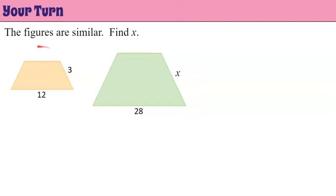It's your turn — you're told that the figures are similar and asked to find X. Since the figures are similar, their corresponding sides are proportional. Side 3 corresponds to side X, and side 12 corresponds to 28. Writing the proportion: 3/X = 12/28. Using cross products: 12X = 3×28 = 84. Dividing both sides by 12: X = 84÷12 = 7. Therefore X in this trapezoid is 7.